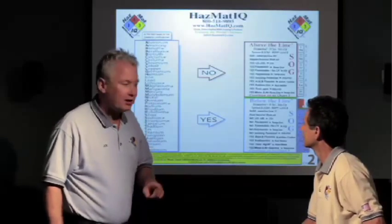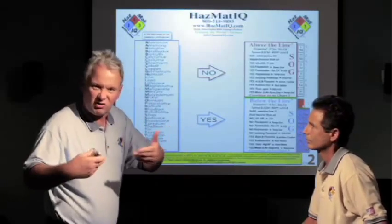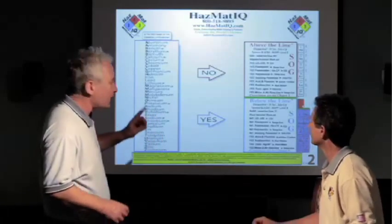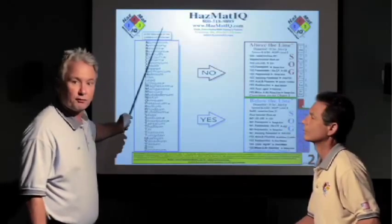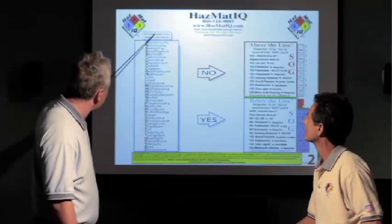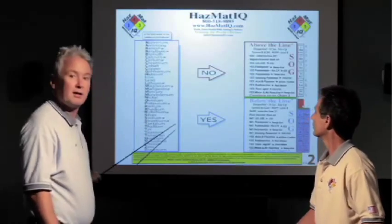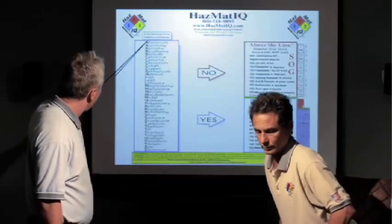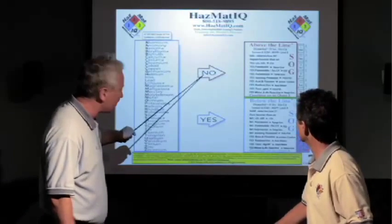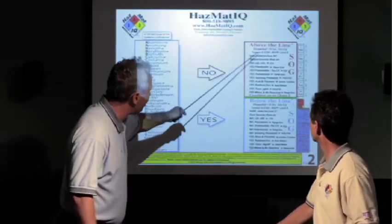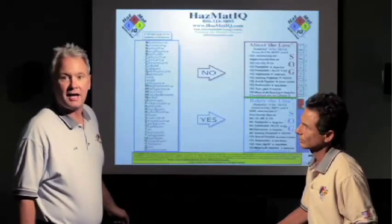So going back to Acetyl Aldehyde, I'm going to use chart number two because it's much easier for me. What you do when you use chart number two is you ask yourself is the first name of the chemical listed in this alphabetical list. The name of the chemical Acetyl Aldehyde. I go to the A's, no Acetyl Aldehyde. So that takes me to the NO box which points to the above the line SOG.